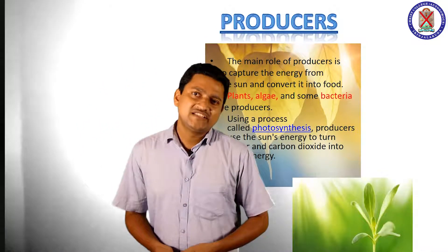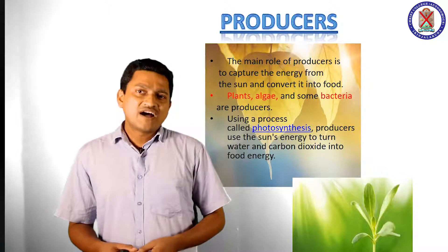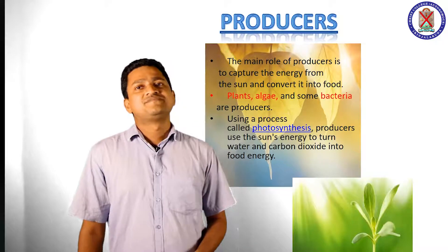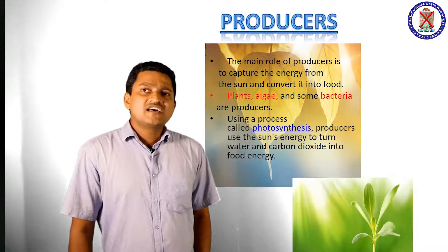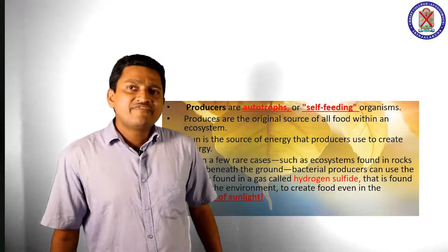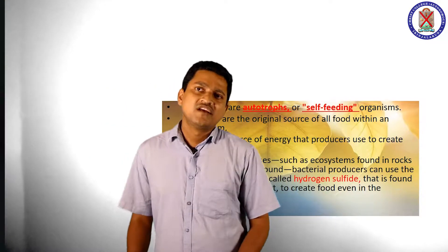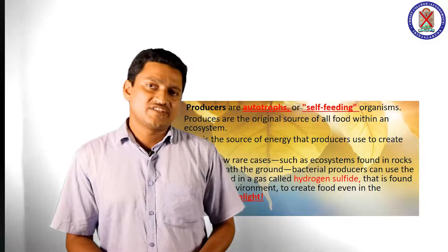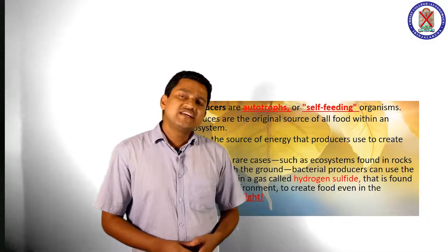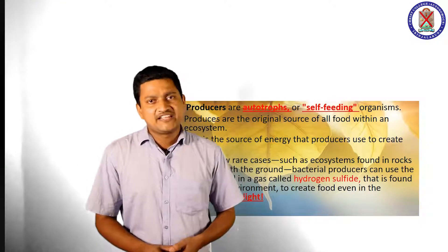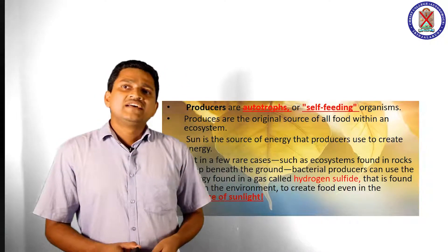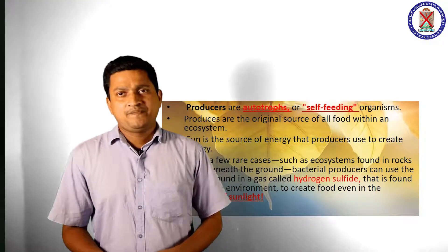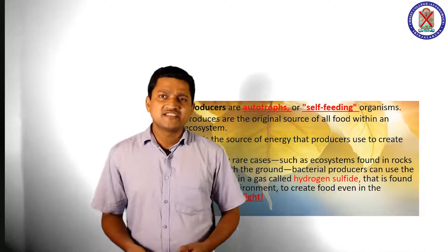During photosynthesis, carbon dioxide, water and solar energy are used to produce food. Producers are autotrophs, or self-feeding organisms. Producers are the original source of all food within an ecosystem, meaning producers supply the primary source of energy.